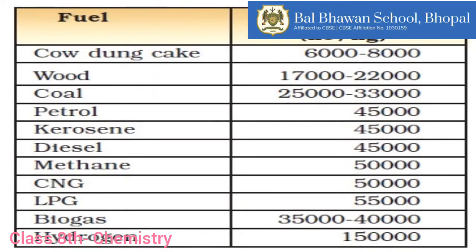Based on the calorific value we can find out which fuel has the maximum calorific value and which has the least. Comparing the different types of fuels, we observe that cow dung cakes have a minimum calorific value of 6,000 to 8,000 kilojoules per kg, whereas hydrogen gas has the highest calorific value of 150,000 kilojoules per kg.